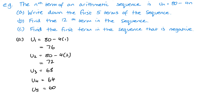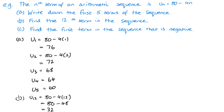Part B is to find the 12th term. U12 = 80 − 4 × 12 = 80 − 48 = 32.